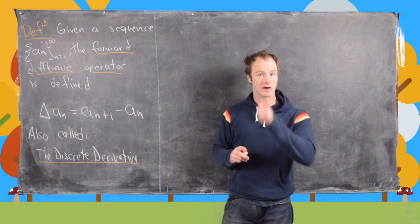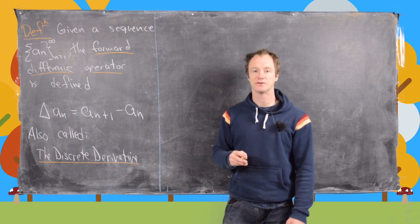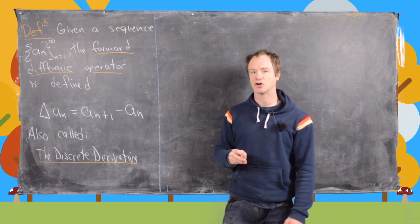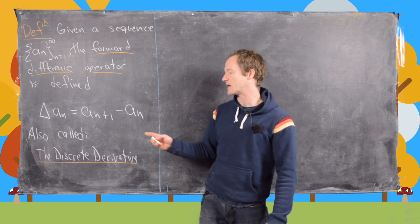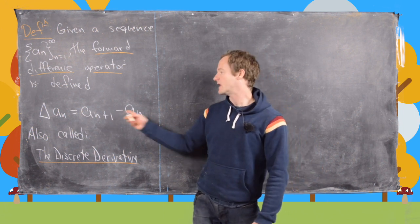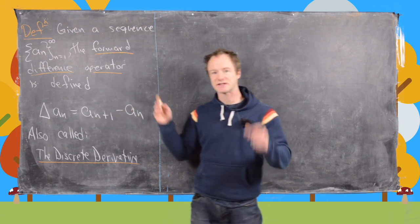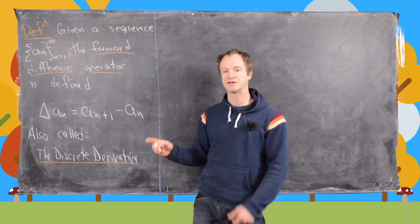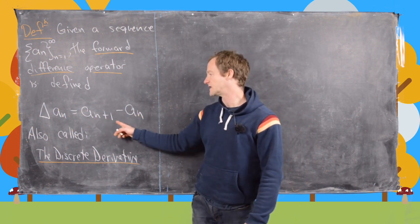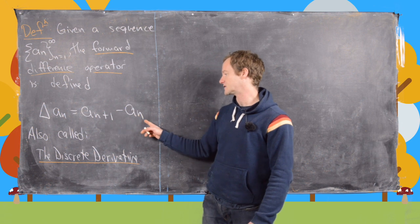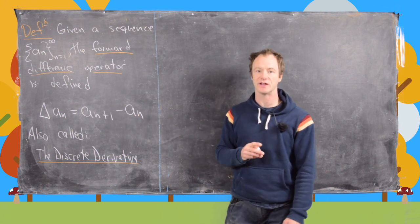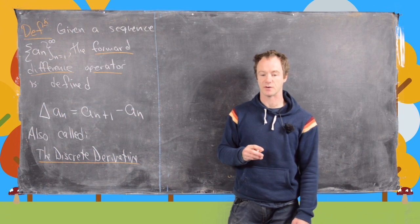If you think about the definition of the derivative of a continuous function, you would have f(x+h) minus f(x) over h, and then take a limit. But in this case the domain of a sequence is really just the natural numbers, so the closest two elements in the domain can be is one unit apart — this is as close as you can get to the notion of the derivative of a sequence.